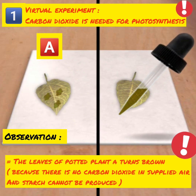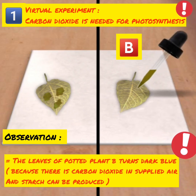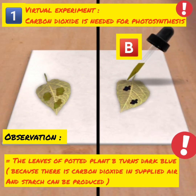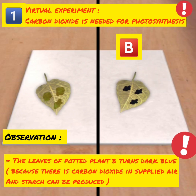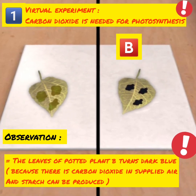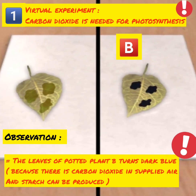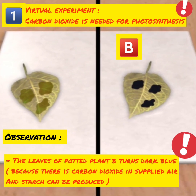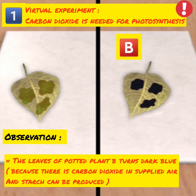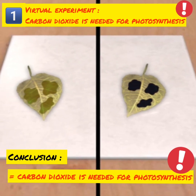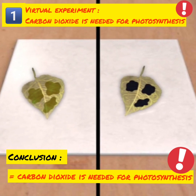The leaf from potted plant A turns brown when a few drops of iodine solution are added, because the supplied air does not have carbon dioxide and starch cannot be produced. The leaf from potted plant B turns blue-black because the supplied air has carbon dioxide and starch can be produced. This shows that the photosynthesis process requires carbon dioxide.